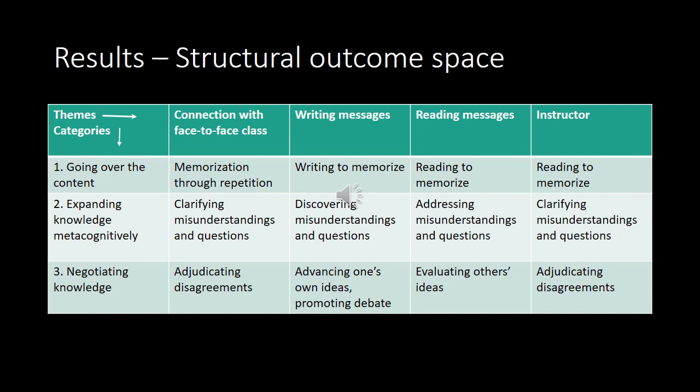What I am presenting here is the structural outcome space — that is, the how of learning, how they learn, and what they think about that learning through the online discussion forums. We find three broad categories: going over the content, expanding knowledge metacognitively, and negotiating knowledge. The first category involves thinking that responding to peers, reading their messages, connecting with the face-to-face class, and connecting with the instructor are all connected to repetition and memorization. The second category involves thinking that these different themes work to assist metacognition — to notice gaps in knowledge, misunderstandings, and to repair them. Finally, negotiating knowledge is the most sophisticated category, involving critique of others' ideas, advancing one's own ideas, and promoting debate. The relationship with the instructor and the face-to-face class has to do with deciding who is right in a controversy among students.